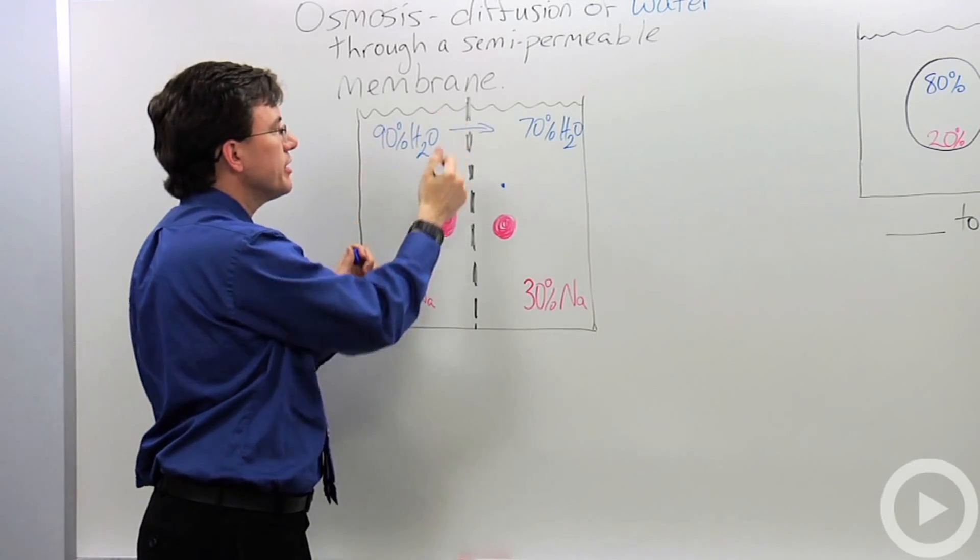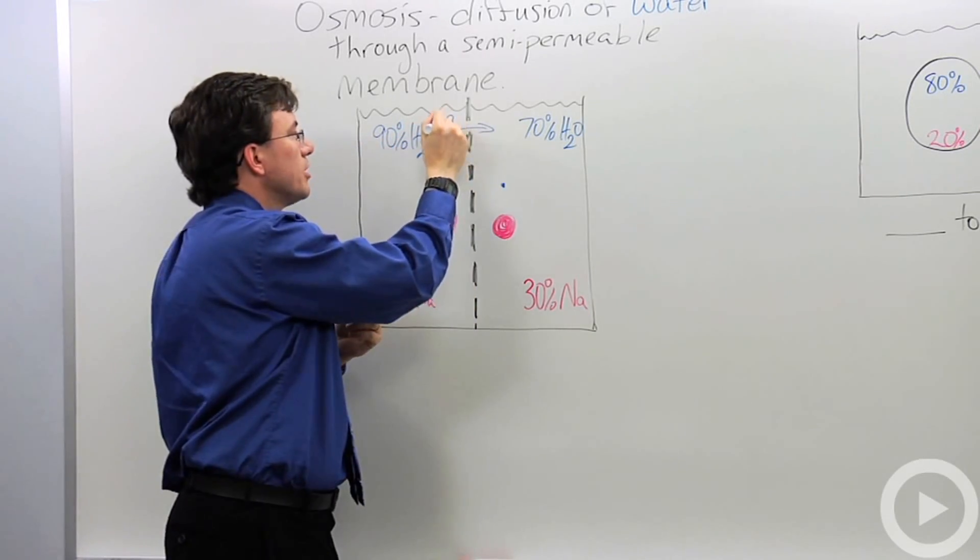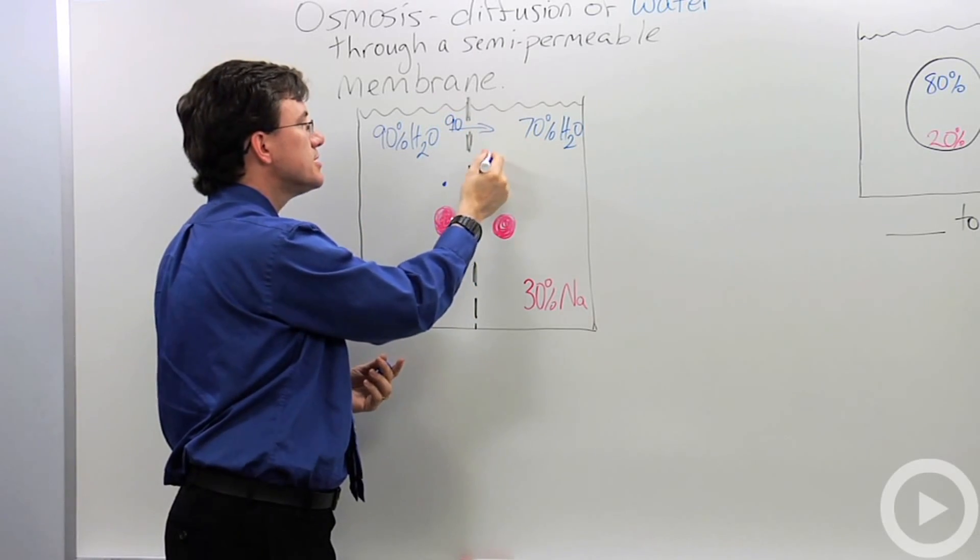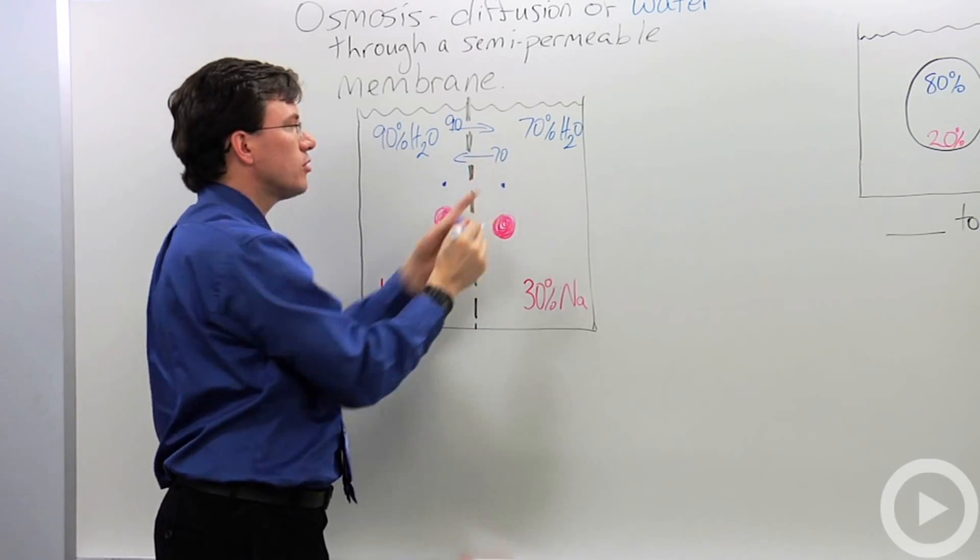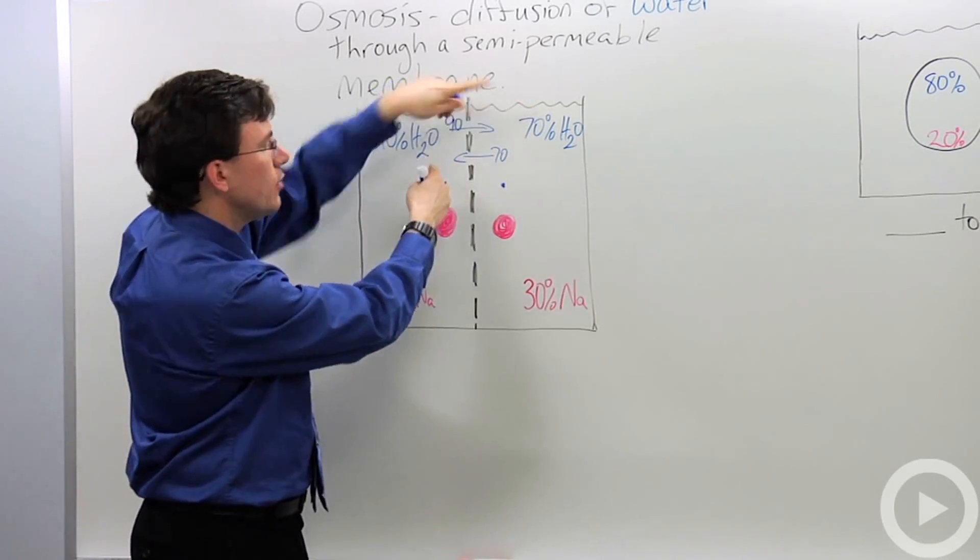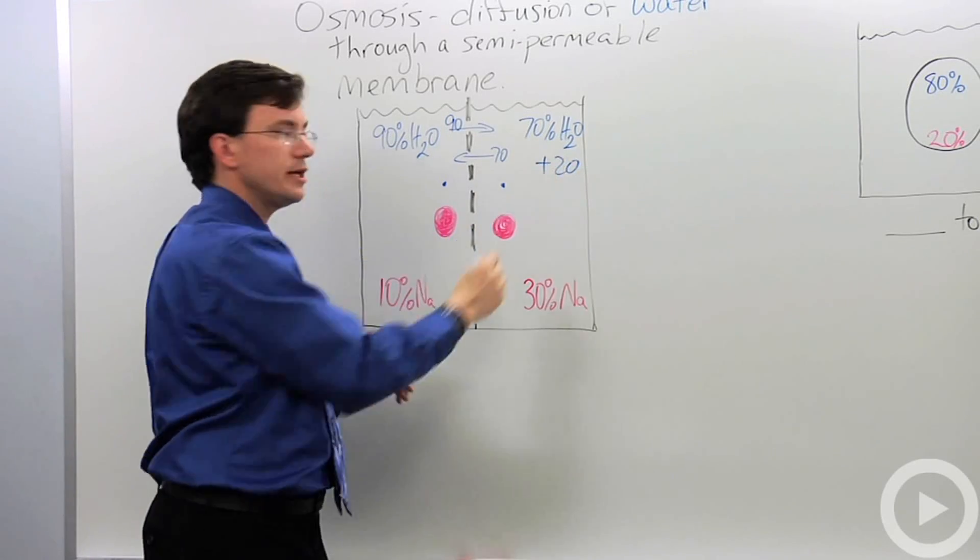If I look at just this one area here, if this is 90% then let's suppose I'll make up a number of 90 molecules of water going that way. At the exact same time 70 of the water molecules over here are going back. 90 go this way, 70 go that way. There's a net difference of we're gaining 20 on this side.